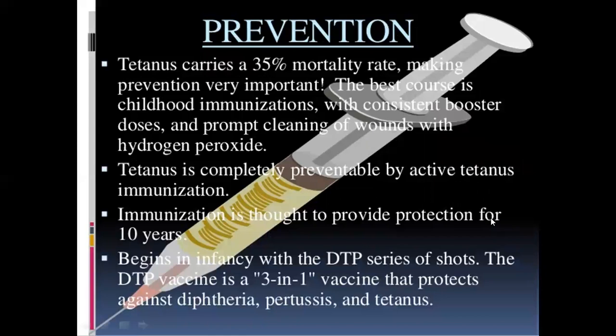Now prevention. Tetanus carries a 35% mortality rate, making prevention very important. The best course is childhood immunization with consistent booster doses and promoting cleaning of wounds with hydrogen peroxide. Tetanus is completely preventable by active tetanus immunization.